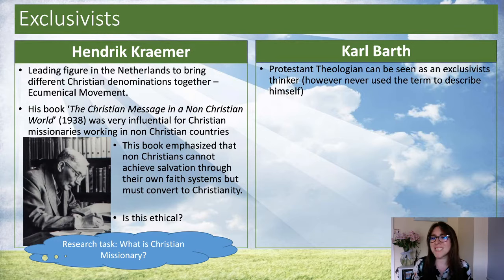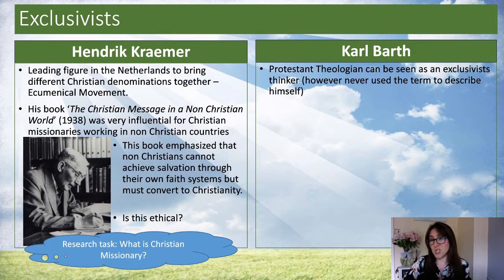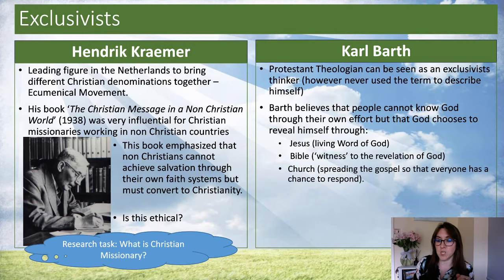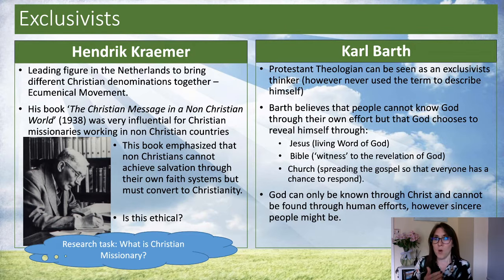Karl Barth was a Protestant theologian who could be seen as an exclusivist. He never described himself this way, but what he argues definitely sounds exclusivist. He's the figure from Death and Afterlife who talks about limited election — everybody can be saved but only those that follow Christ. Barth believes people cannot know God through their own effort, but that God chooses to reveal himself through Jesus, the living word, the Bible, and the church spreading the gospel. God can only be known through Christ and cannot be found through human efforts, however sincere people might be.